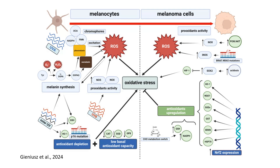Solar UV — both UVA and UVB — triggers the production of reactive oxygen species. Melanin, which is synthesized in response to UV radiation, plays a dual role: while eumelanin can provide photoprotection, pheomelanin promotes ROS production due to its pro-oxidant activity during synthesis. Solar UV also depletes key antioxidants like glutathione and induces POLE mutations, reducing the cell's ability to combat oxidative stress.